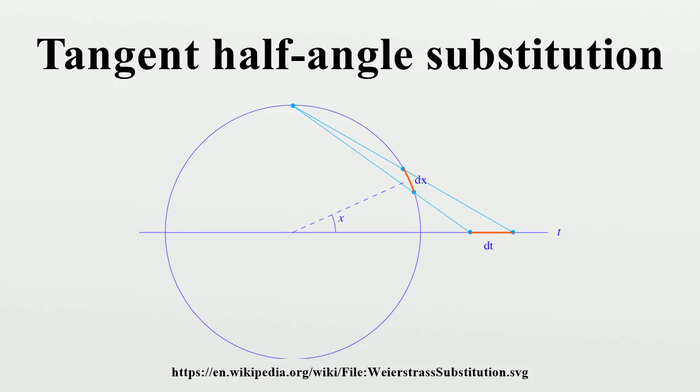Here is another geometric point of view. Draw the unit circle, and let P be the point. A line through P is determined by its slope.